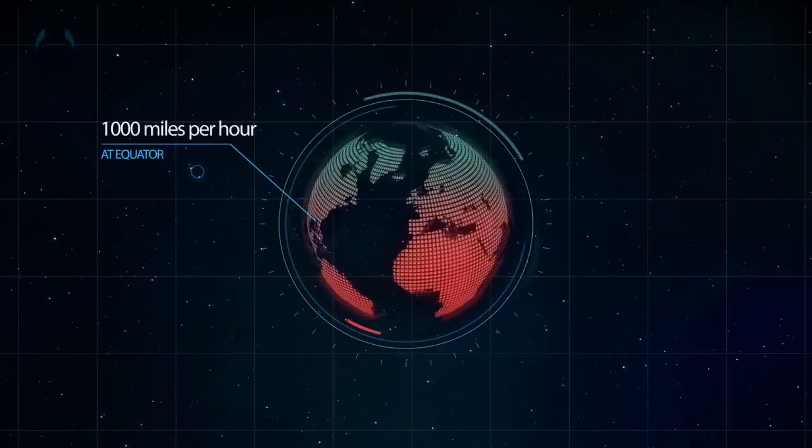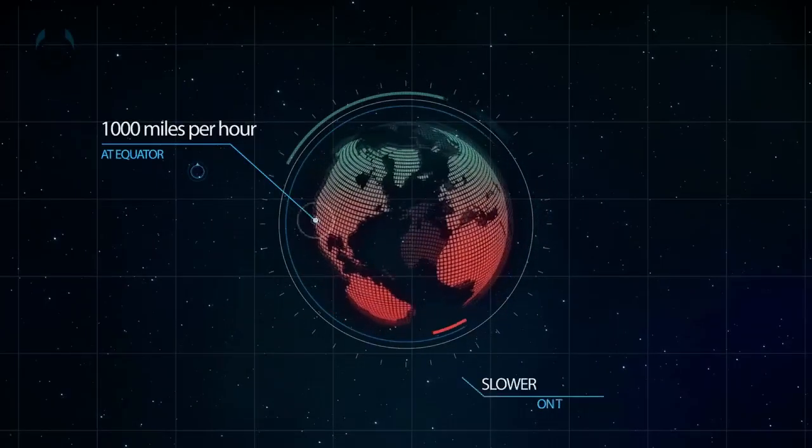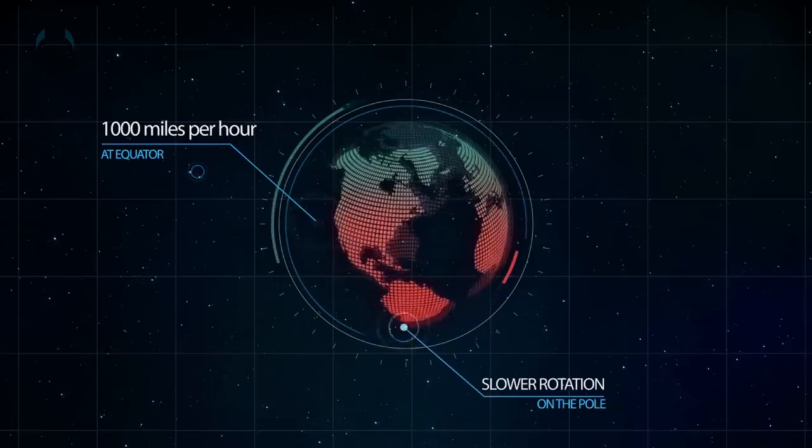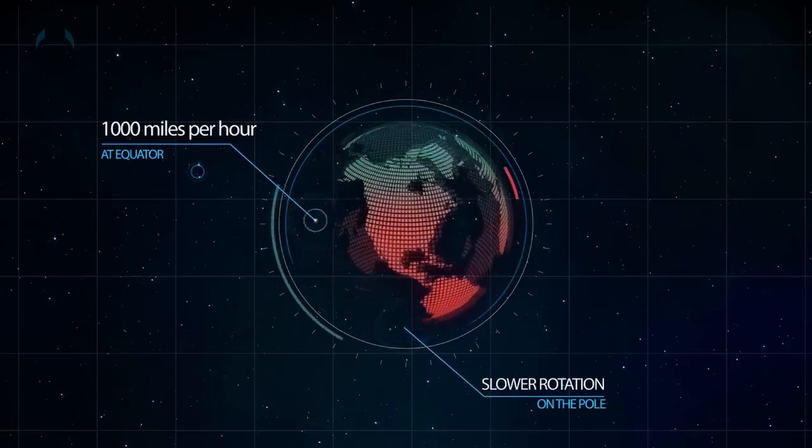Our planet spins at its equator 1,000 miles per hour as it orbits the Sun. But as you get closer to the poles, the rotation is slower.